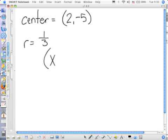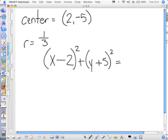So it's x minus the x-coordinate of the center squared plus y minus the y-coordinate of the center squared is equal to the radius squared. Well, what's 1 third squared? 1 ninth. So you wouldn't want to put 1 third squared. You would put 1 ninth.